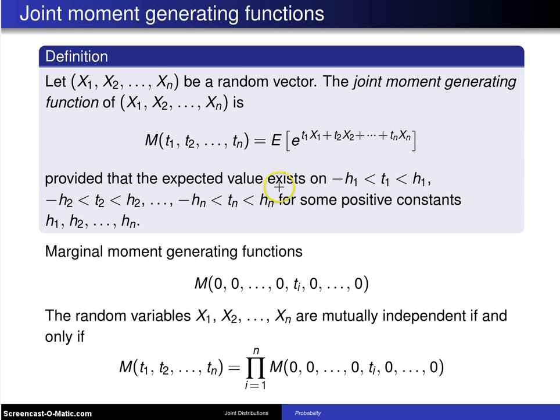that the expected value exists in some rectangular region, and in this case it would be called a hyperrectangle that is positioned about the origin for some positive constants h₁, h₂ up to hₙ.